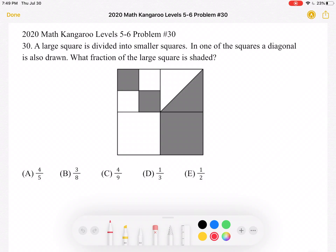This is the 2020 Math Kangaroo Levels 5-6, Problem Number 30. A large square is divided into smaller squares. In one of the squares, a diagonal is also drawn. What fraction of the large square is shaded?